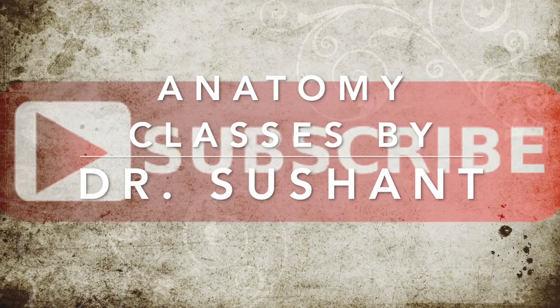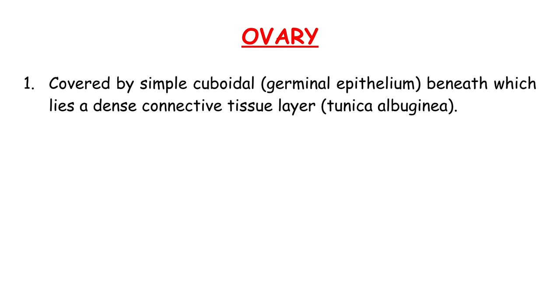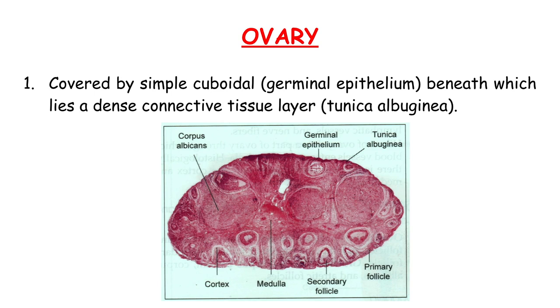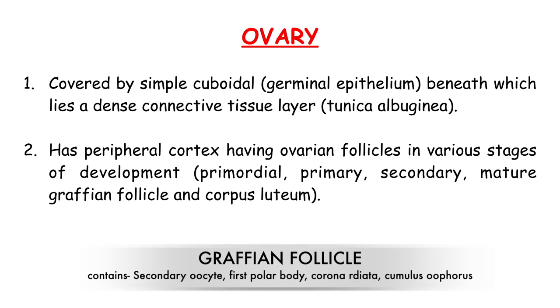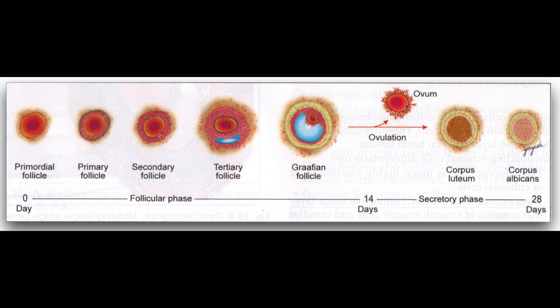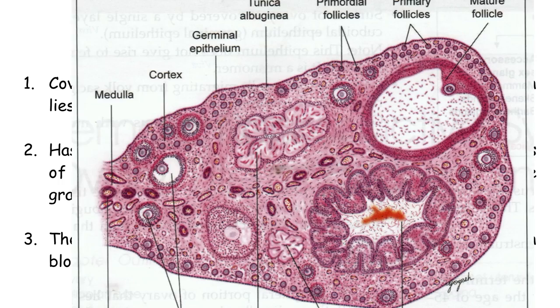Ovary. Covered by a simple cuboidal, i.e. germinal epithelium, beneath which lies a dense connective tissue layer known as tunica albuginea. A peripheral cortex having ovarian follicles in various stages of development, i.e. primordial, primary, secondary, mature Graafian follicle, and corpus luteum. The central medulla has dense irregular connective tissue with blood vessels, nerves, and lymphatics.